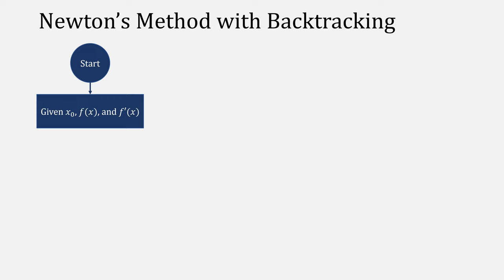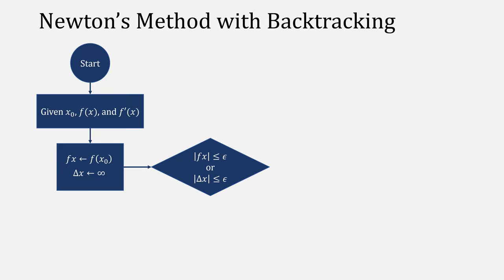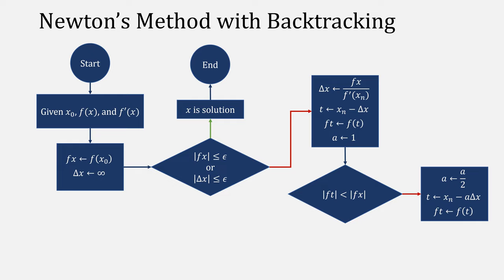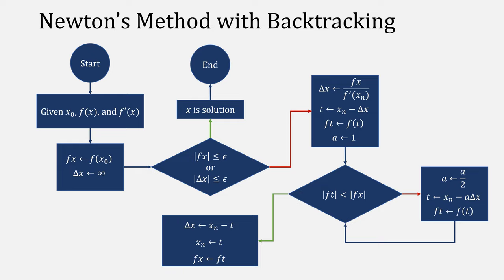Here's what that algorithm will look like. Given our starting point and initial value for x, f, and f', compute fx being f of x and delta x starting at infinity. Then check if our f is small enough or our step was small enough. When either was the case, x is the solution and we can stop. Otherwise, let delta x be our step and create a temporary value, t and f of t. Then let A equal to 1. Check if our next point will be smaller. If it isn't, divide A by 2 and create a new value for t and f of t. And re-check. Otherwise, let delta x be our actual step and assign t to x and f of t to f of x. And restart the process.